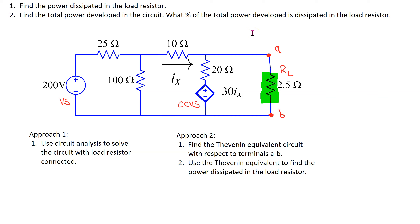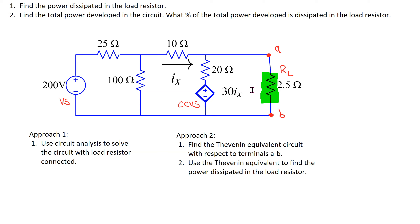In order to solve this problem there are two main approaches. The first is to use circuit analysis from first principles to solve for the voltages and currents and then determine the total power dissipated in the load — in this approach RL is included in the circuit. The second approach is to remove RL, find the Thevenin equivalent circuit with respect to terminals A and B, then reconnect the load resistor to find the power dissipated in it.